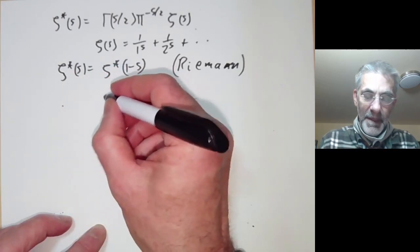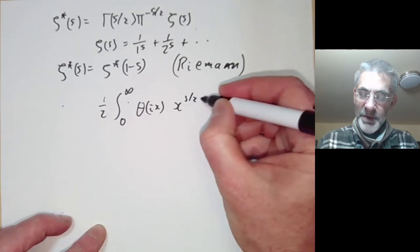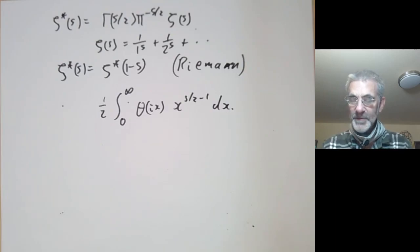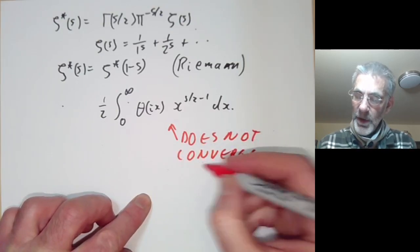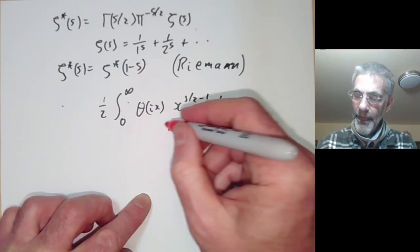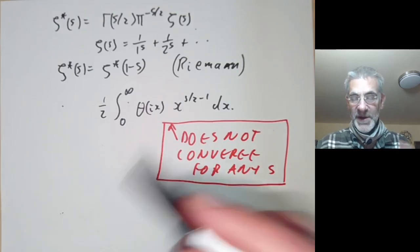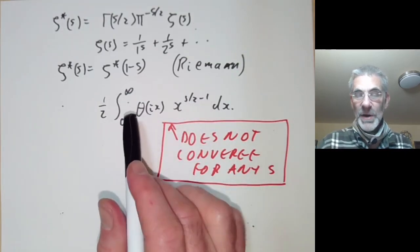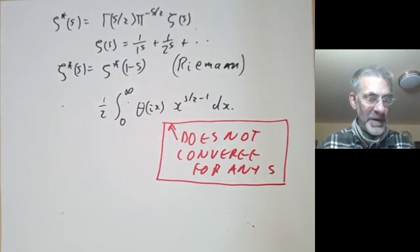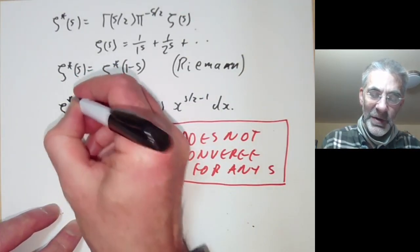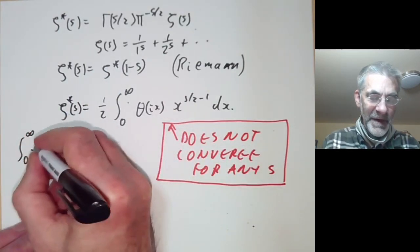There is a big problem with this integral in that it does not converge for any value of s. However, let's ignore this for the moment, pretend it converges, and show how to get the functional equation of the Riemann zeta function. We'll then go back and fix the convergence issue. Formally, this integral would be equal to zeta-star of s.